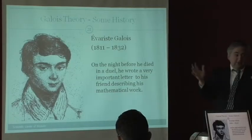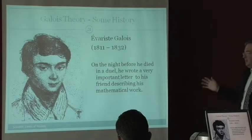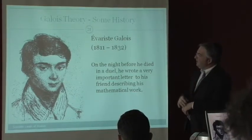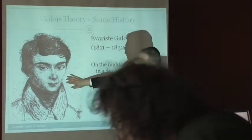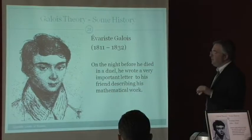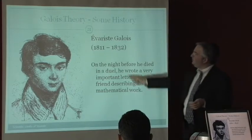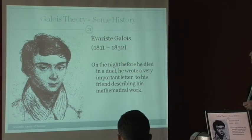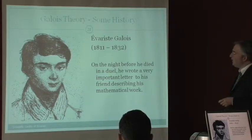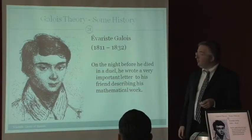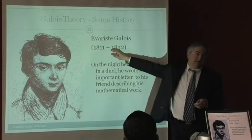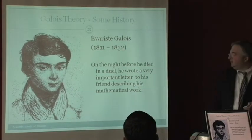All right. Galois. So this is in the colloquium of the math problem, so you might have seen this. So this is Galois. This is Galois when he was 15. But don't be upset that I don't have a more updated picture because he didn't really live that much longer. So on the night before he died in a duel, he wrote a very important letter to his friend describing his mathematical work. And again, he died at 21 years, but he was actually 20 when he died.